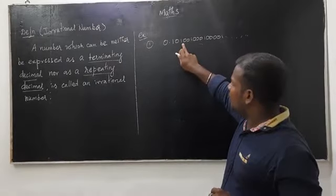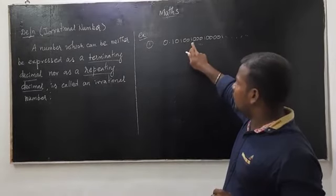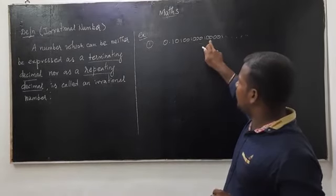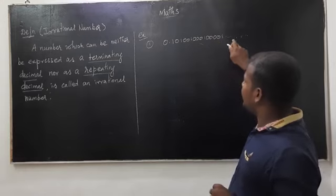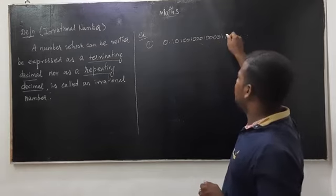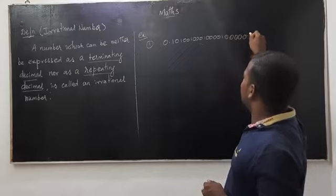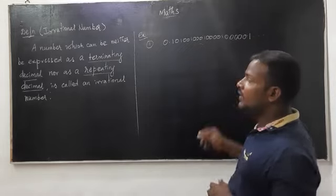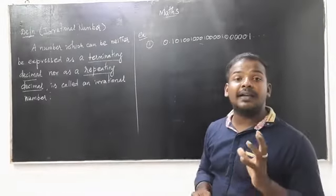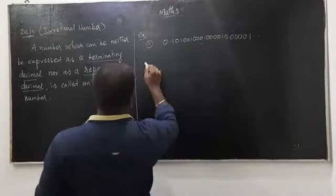The digits go: 1, 0, 1, double 0, 1, double 0, 1, double 0, 0, 1 — it is still going on. Next digits: 0, 0, 0, 0, 0, 1 — it is still going on. It is not repeating. So this is your first example of an irrational number.